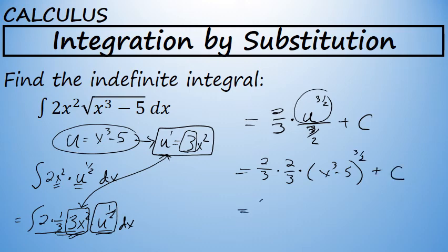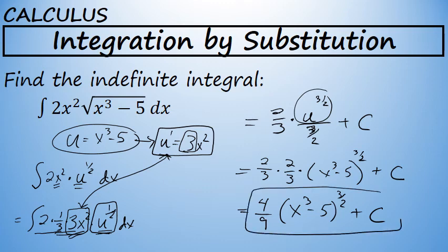Two-thirds times two-thirds is four-ninths. The integral of 2x² times the square root of x³ - 5 dx is four-ninths times (x³ - 5) to the three-halves plus C.